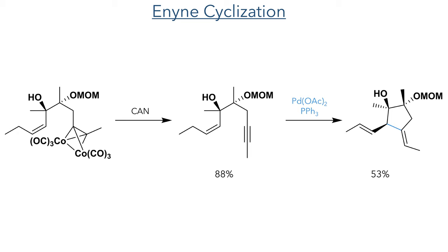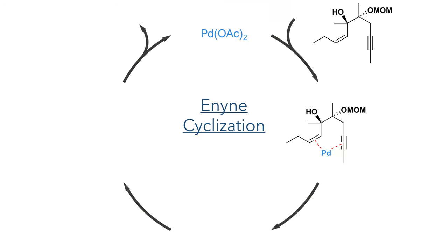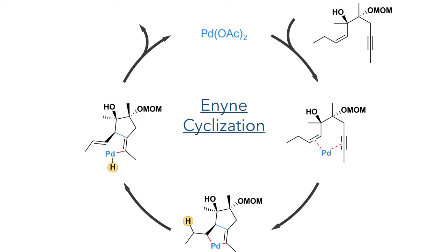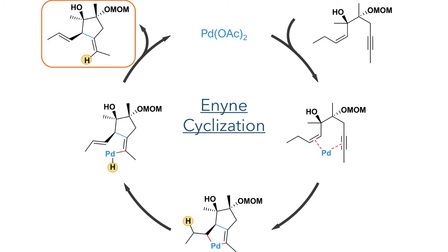Having served this purpose, the cobalt complex was oxidized using cerium ammonium nitrate to restore the alkyne in an 88% yield, which then took part in an enyne cyclization catalyzed by palladium acetate and triphenylphosphine to produce the first of the four rings of the target in a 53% yield. This cyclization begins with the coordination of the palladium to both the alkene and the alkyne pi bonds. An ene-type cyclization occurs, the alkene is reduced to a single bond and the alkyne reduced to a double bond, and the intermediate then undergoes a beta-hydride elimination with the palladium abstracting a proton to produce a new double bond.